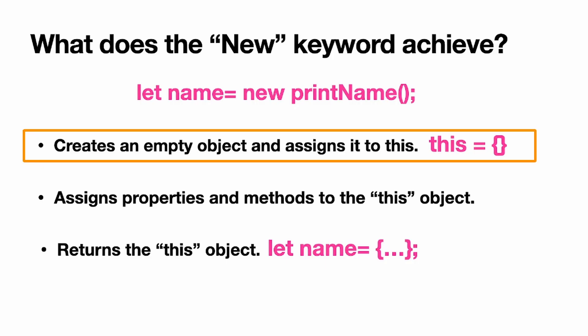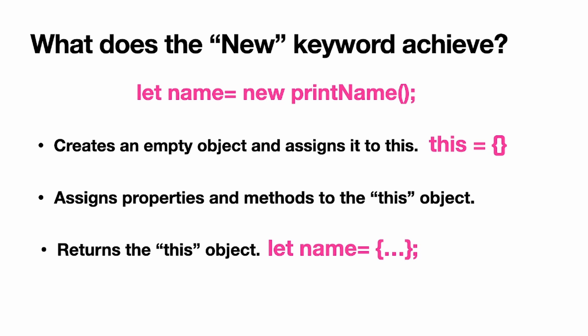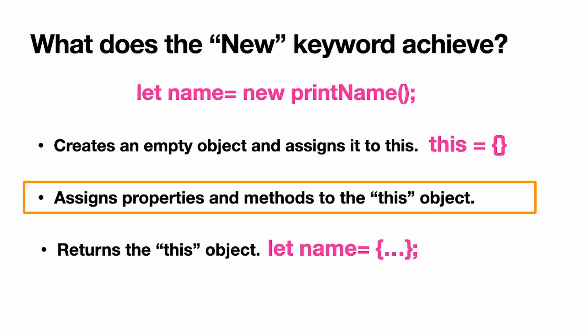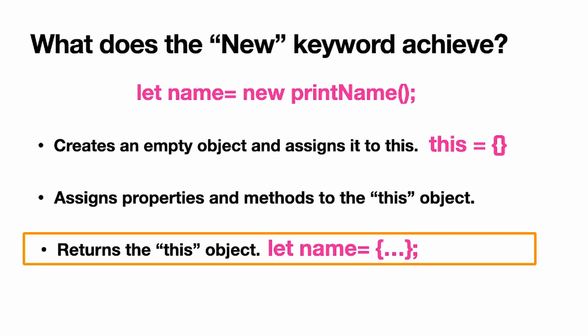In conclusion, what does the new keyword achieve? It first creates an empty object and assigns it to this. It then assigns properties and methods to the this object, and finally returns the this object.